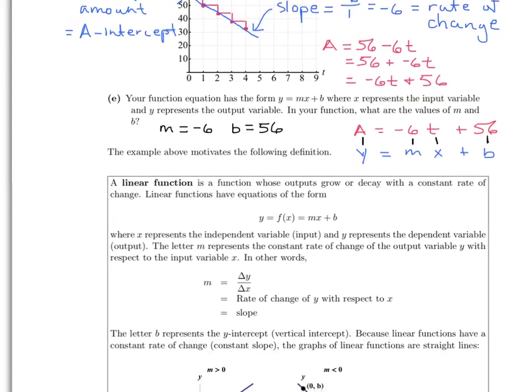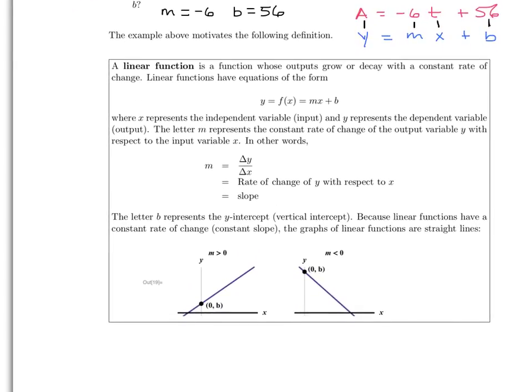Okay, so let's go ahead and summarize everything that we've learned from the last example and generalize it. A linear function is a function whose outputs grow or decay with a constant rate of change, like what we were assuming in the last example. Linear functions have equations of this form, y equals f(x) equals mx plus b, where x represents the input variable and y represents the output variable, or the dependent variable. The letter m represents the constant rate of change of the output variable with respect to the input variable x. In other words, m is the ratio of the change in output y to the change in the input x. We call this the rate of change of y with respect to x, and it is the same as the slope of this line.